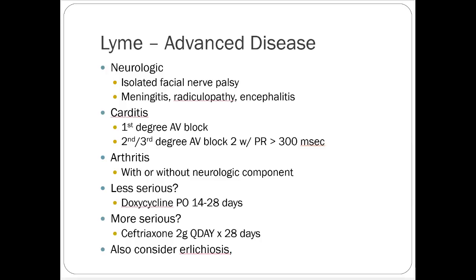The problem with spirochetes is the longer they go untreated, the more they burrow into different areas. You can end up with cardiotoxicity causing arrhythmias, neurologic problems causing nerve palsies, meningitis-like symptoms, encephalitis, and arthritis with joint pain. Advanced Lyme is treated the same way — doxycycline — with ceftriaxone as another option that has good coverage.